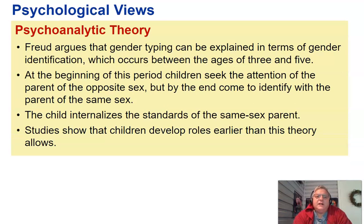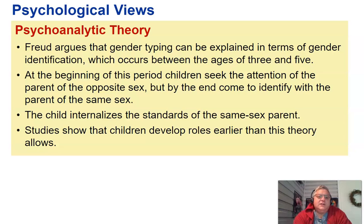Freud argued that gender typing can be explained in terms of gender identification, which occurs between the ages of three and five. At the beginning of this period, children seek the attention of a parent of the opposite sex. By the end, they come to identify with the parent of the same sex. The child then internalizes the standards of the same-sex parent. Studies show that children develop gender roles earlier than this theory allows.